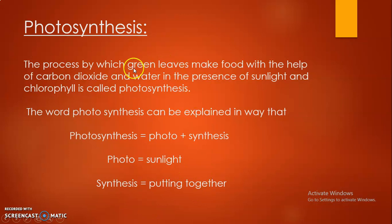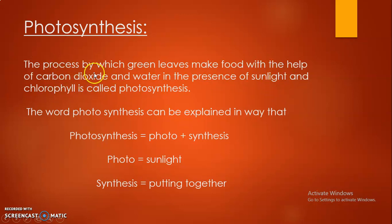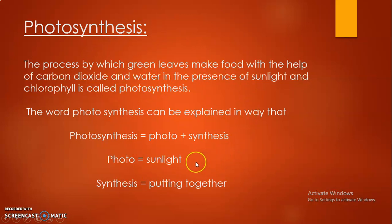So here, leaves collect all the sunlight coming from the sun, the carbon dioxide coming from the air, and the water from the soil, and put them together to make the food for the plants. Let's see the process in detail.